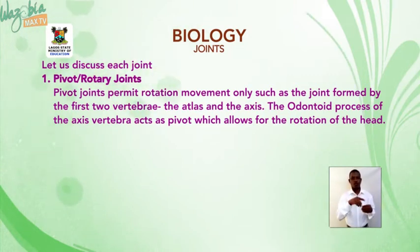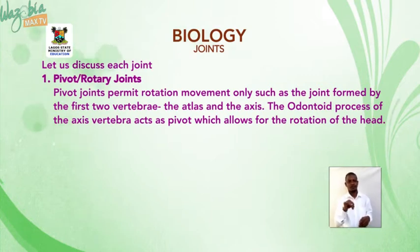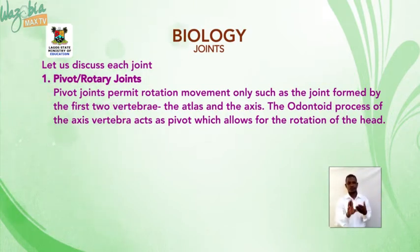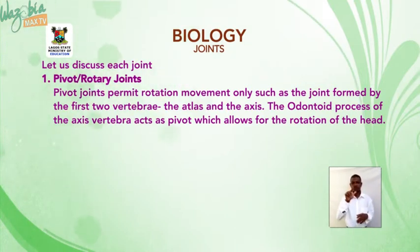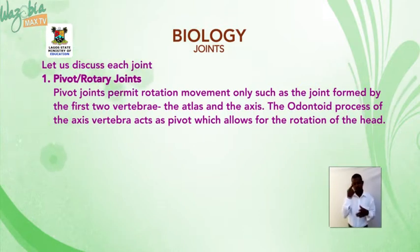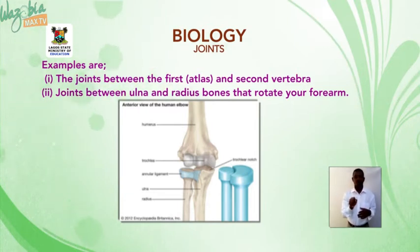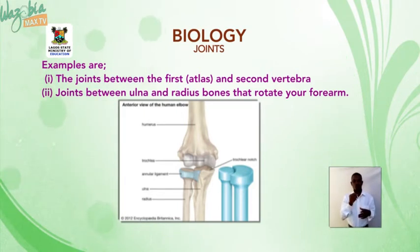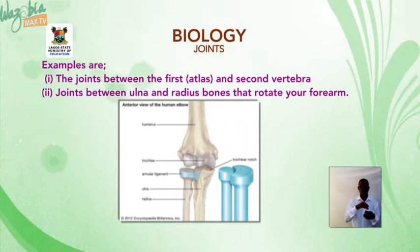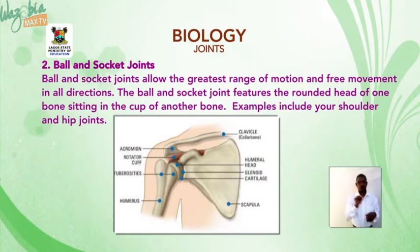Pivot or rotary joints permit rotation movements only. Such as the movement formed by the first two vertebrae — the atlas and the axis. The odontoid process of the axis vertebra acts as a pivot which allows for the rotation of the head. Examples include: the joint between the atlas and axis, and the joint between the ulnar and radial bones that rotate your forearm.